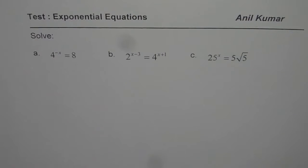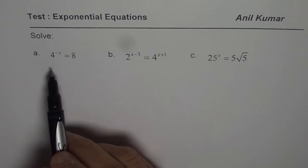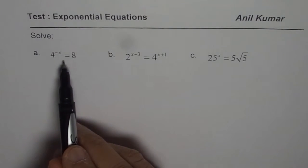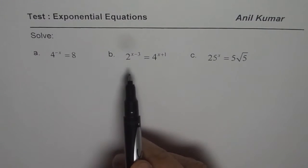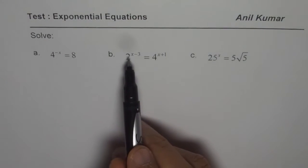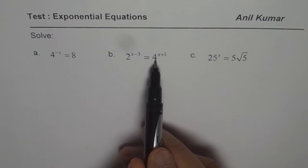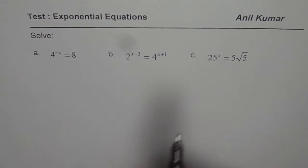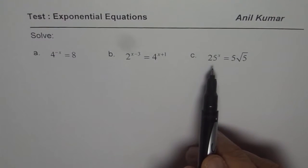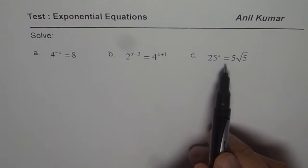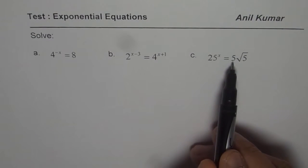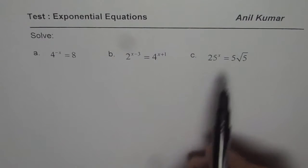I am Anir Kumar and here are three practice questions on exponential equations. Solve 4 to the power of minus x equals to 8; 2 to the power of x minus 3 equals to 4 to the power of x plus 1; and 25 to the power of x equals to 5 square root of 5.